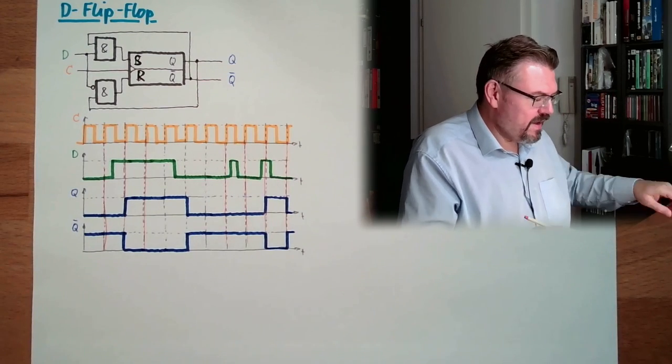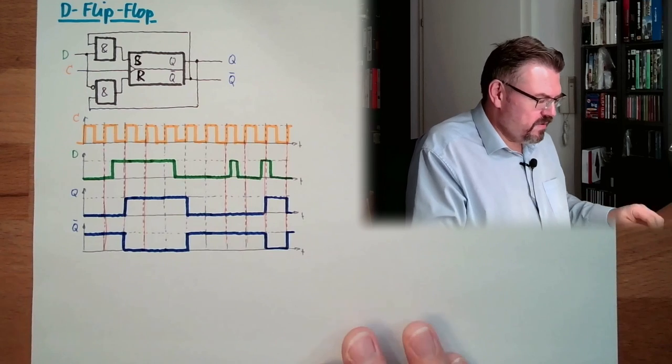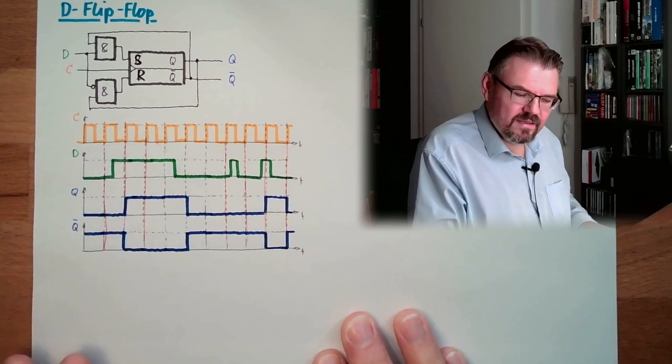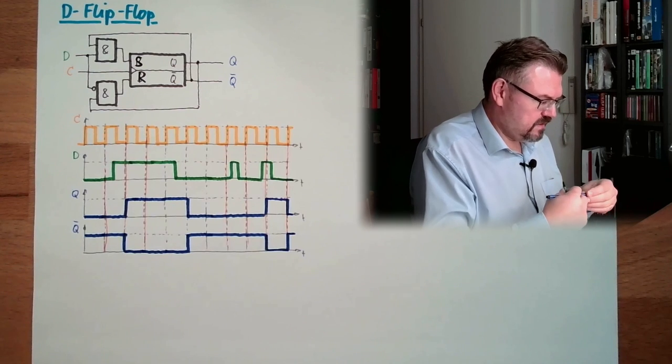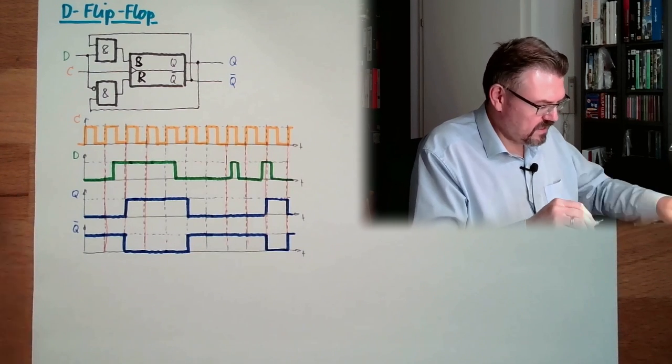This is why it's called also delay. Because simply the D input is delayed until the next clock cycle. This is a D flip-flop. This is how it is working.